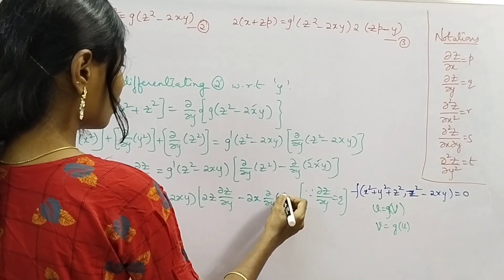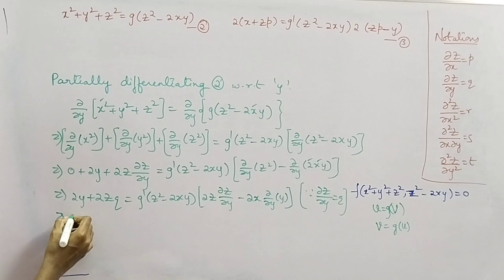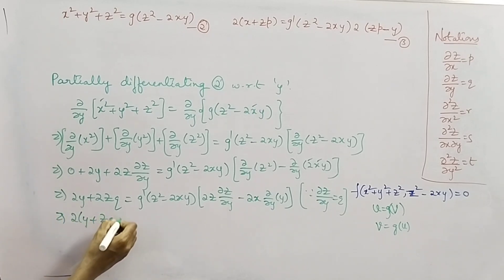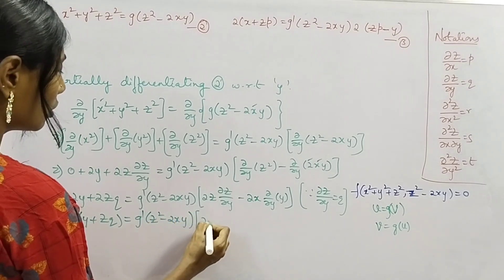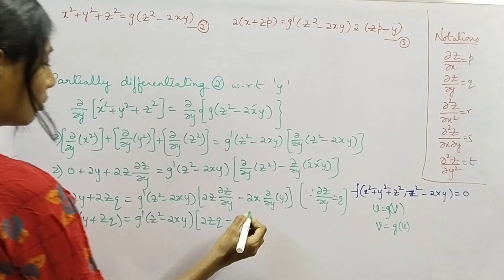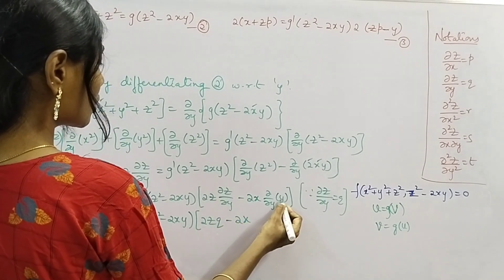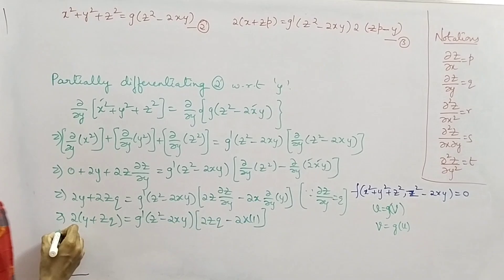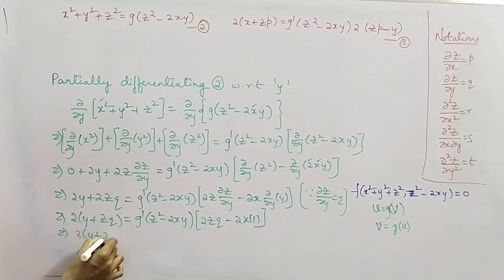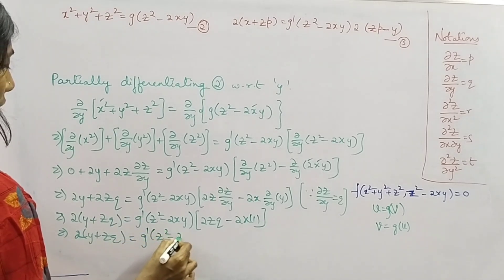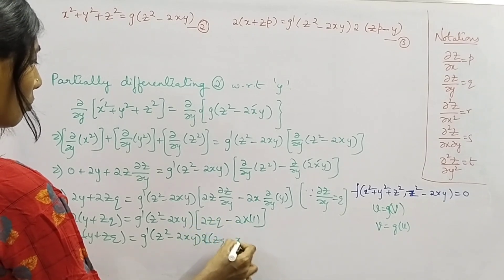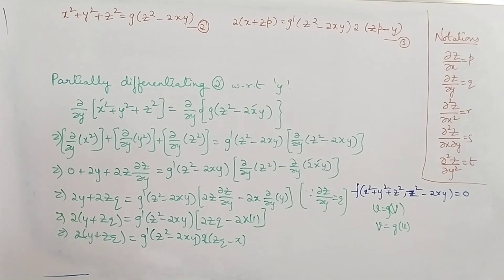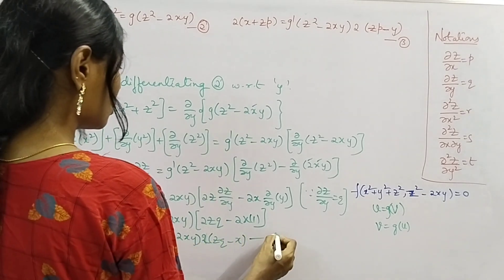Taking 2 common from the left-hand side gives 2(y + zq), using the notation ∂z/∂y = q. The right-hand side becomes g'(z² − 2xy) times (2z · q − 2x · 1), and taking 2 common gives 2(zq − x). So equation 4 is: (y + zq) = g'(z² − 2xy) · (zq − x).